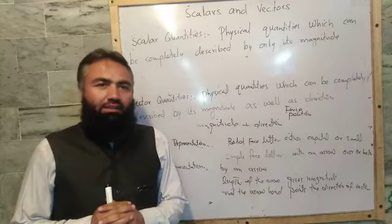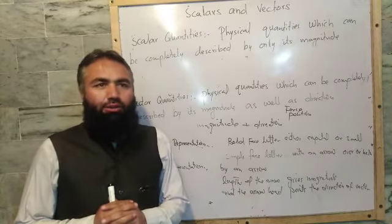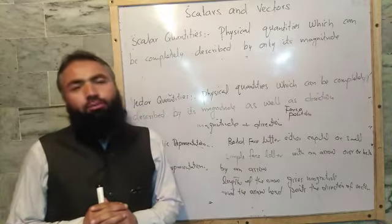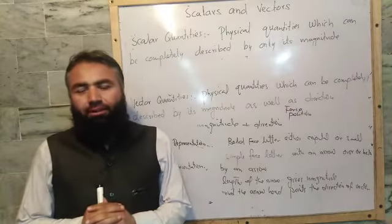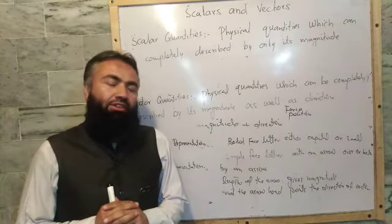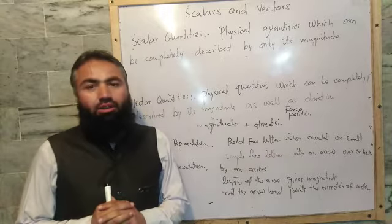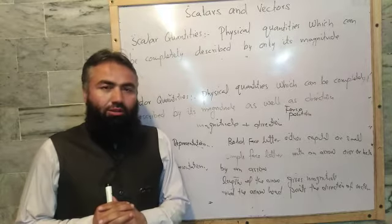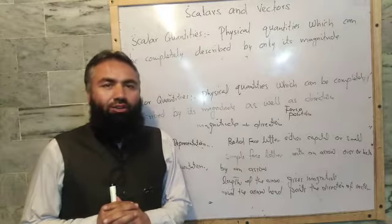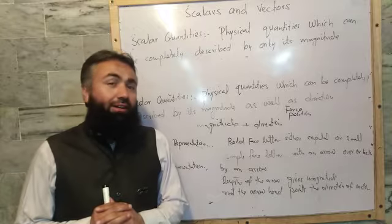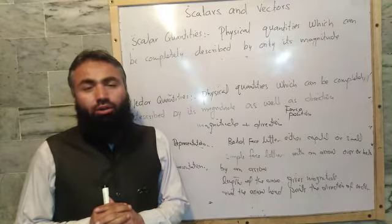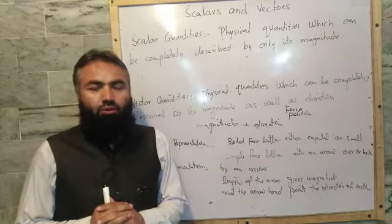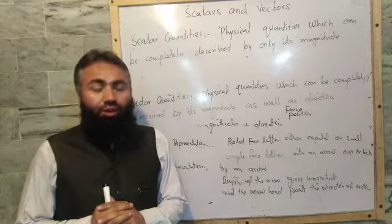Dear students, today our topic is scalar and vector quantities. There are some quantities in processes in our world that depend on the direction in which they occur, and there are some that do not depend on direction. So physical quantities can be categorized on the basis of direction. There are two types: scalar quantities and vector quantities.